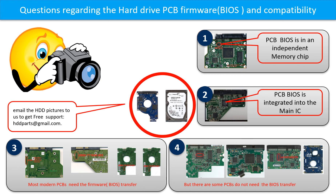The hard drive PCB firmware is also called hard drive PCB BIOS. Some PCB firmware are in an independent memory chip — the memory chip may be 1 or 2. Some PCB firmware are integrated into the main IC. Most modern hard drive PCBs need to do the PCB firmware transfer before swapping the PCB, even if the donor boards are identical with the original boards in hardware.